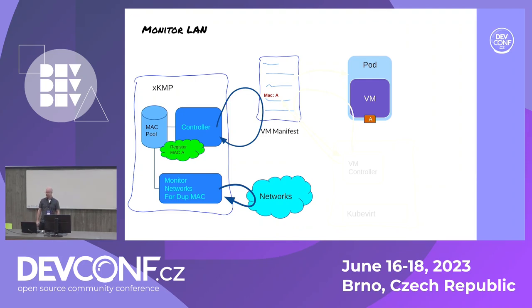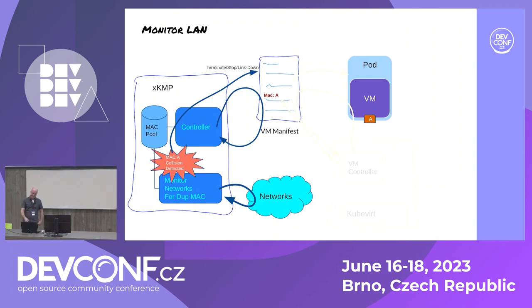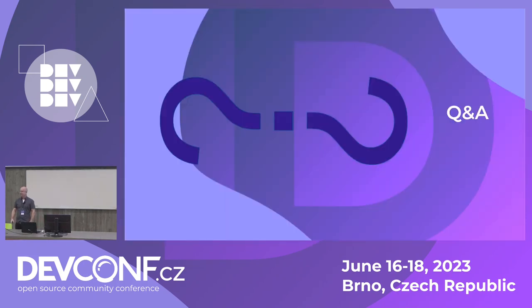It doesn't matter what the solution is — that monitor can look at the network, and once it sees a problem it goes to the controller, which updates the manifest. The same reaction applies: stop the VM, stop the link, whatever. That's most of it — I think I'm finished. Any questions?